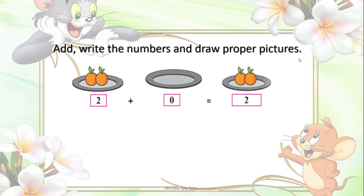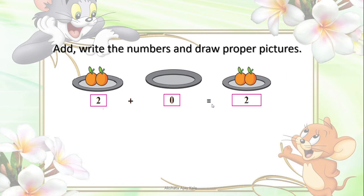Now here you can see — Add, write the numbers and draw proper pictures. See the first one, this is from your textbook. See here, plate with 2 fruits and this plate has no fruit, that is 0. Nothing means 0. So 2 fruits plus 0 fruits together give us only 2 fruits. Zero means nothing; we have not added anything. So 2 remains as it is. 2 plus 0 is equal to 2.